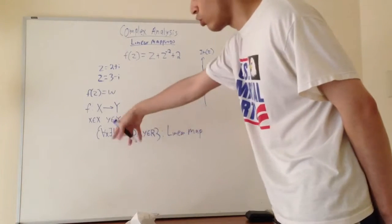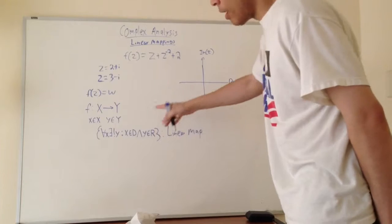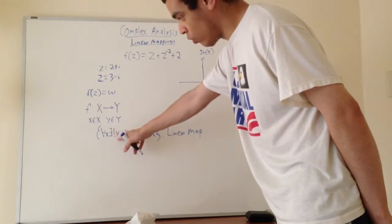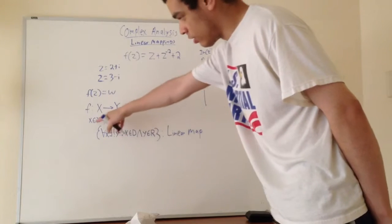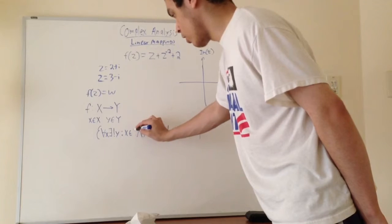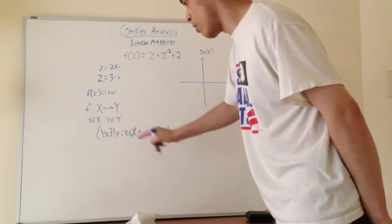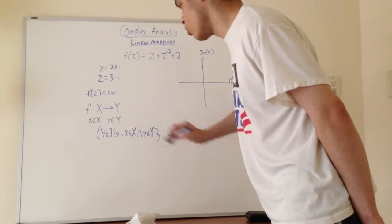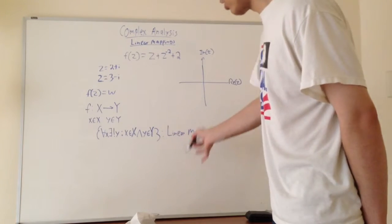Basically, for every element in this set there exists exactly one, only one element y, such that x is in the domain. I can write this as: x is a member of big X, which is the domain, and y is a member of big Y, which is the range or co-domain. That's essentially what a linear map is.